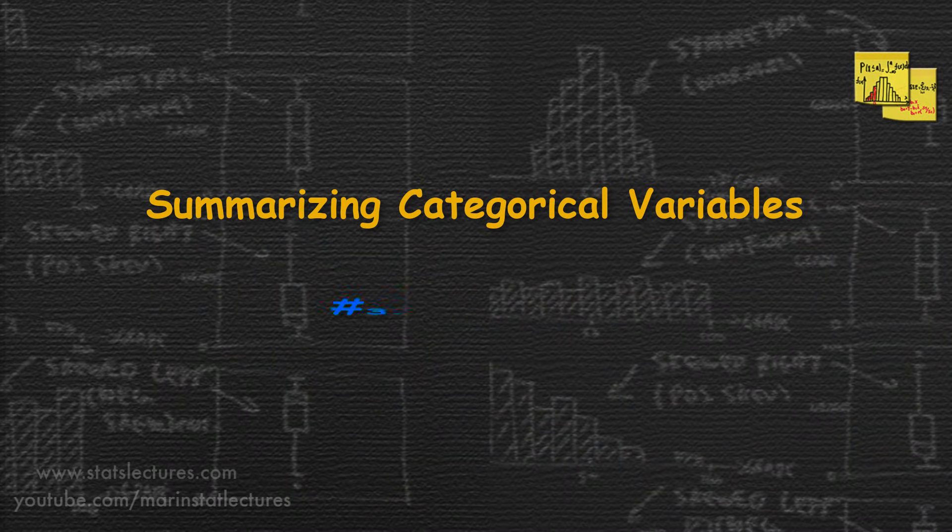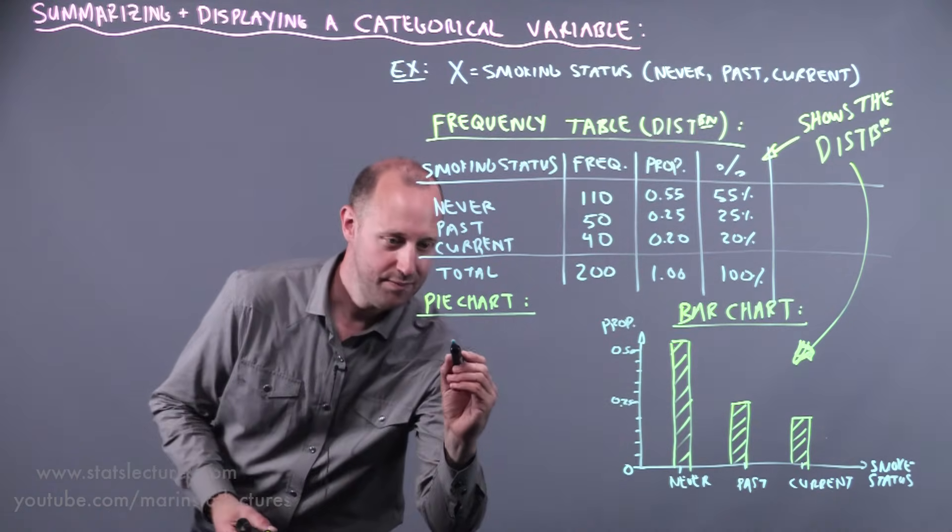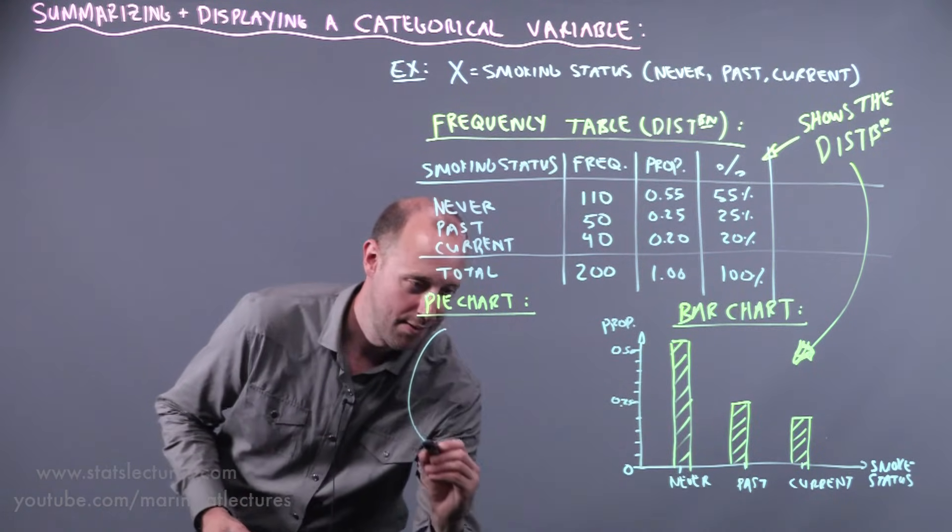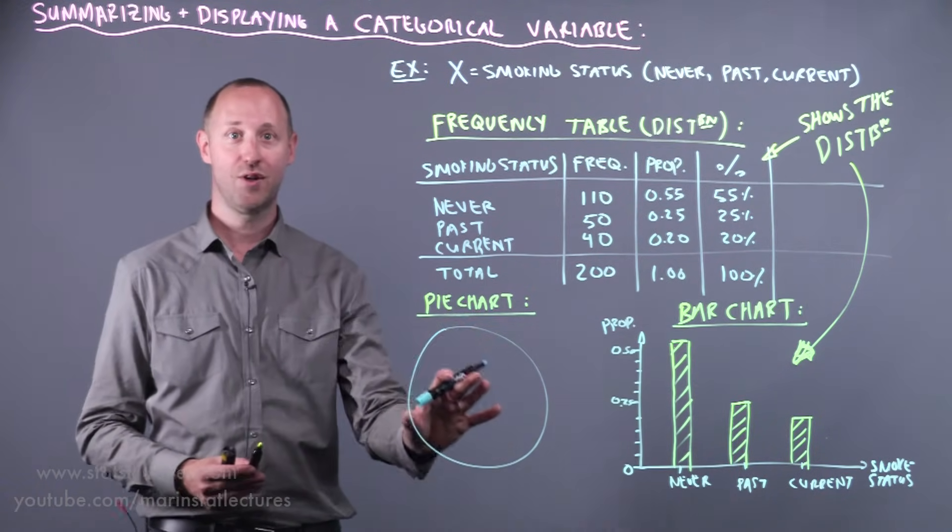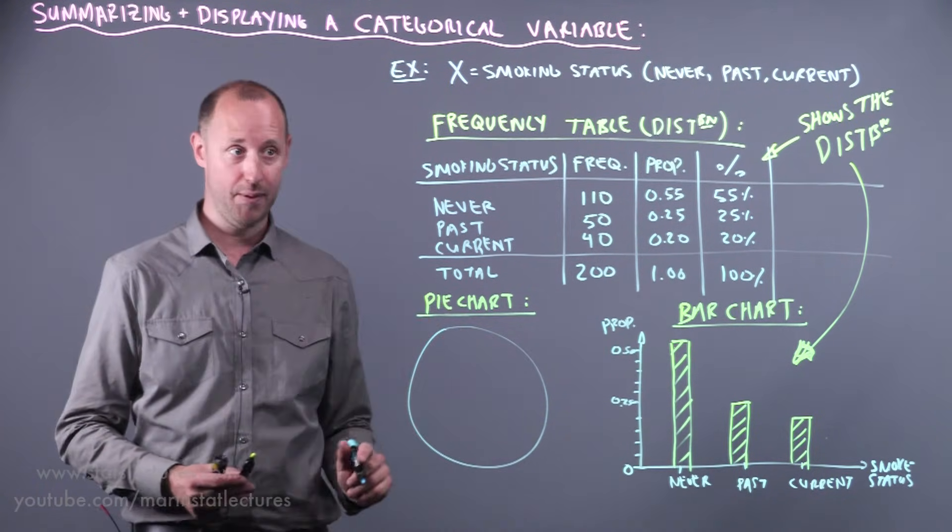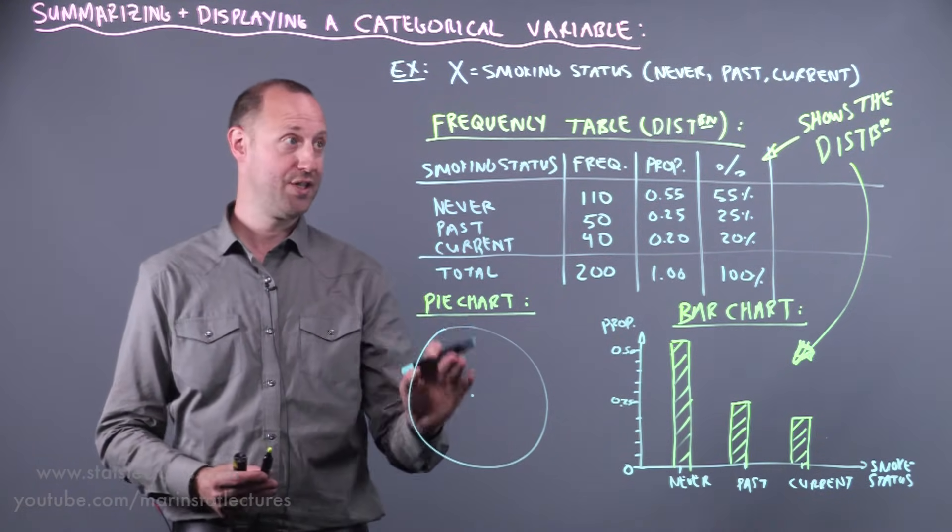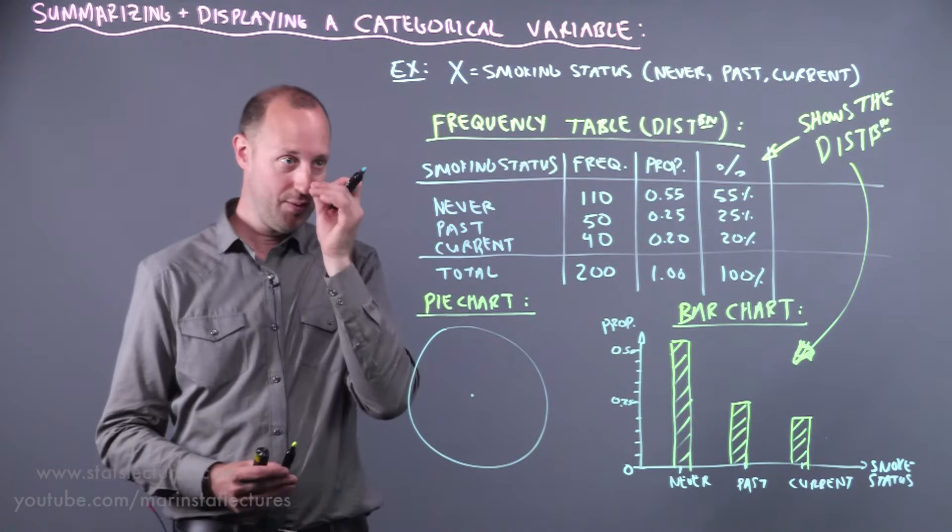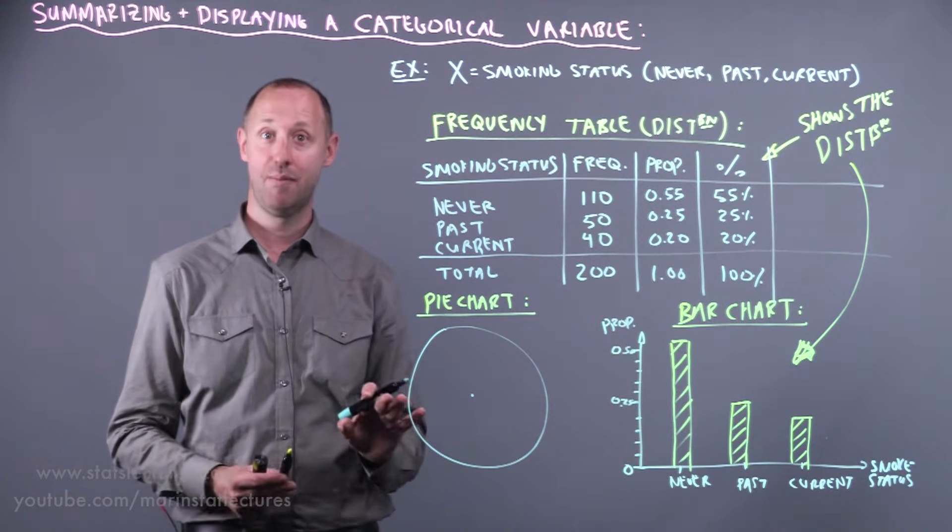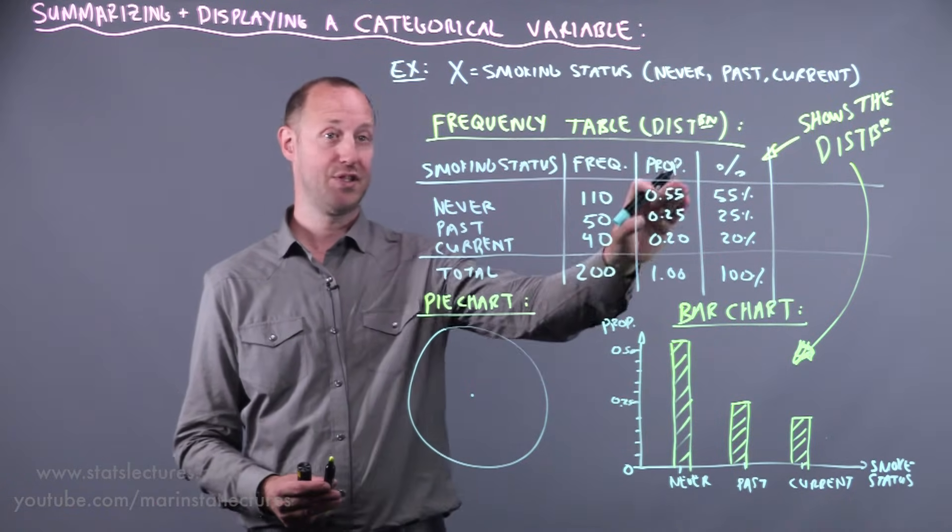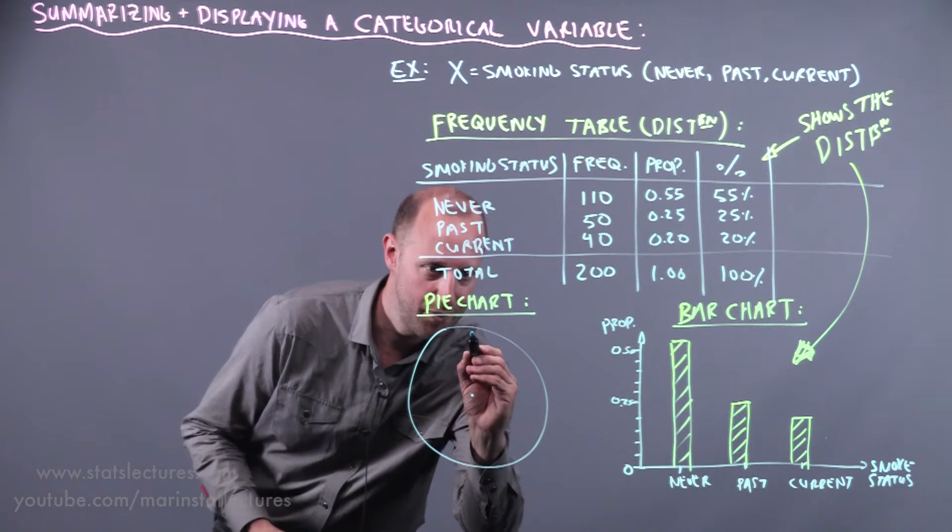The one other plot that we can make for this table or for a categorical variable is a pie chart. The way a pie chart works is you start with a pie, or a circle, and this pie or circle represents the entire sample. Then what we do is for each category or level of this variable, we draw a slice of the pie, and the slice should be proportional to the percentage of the sample they represent. Let's start with the past smokers.